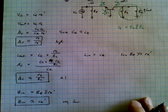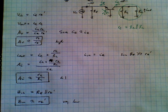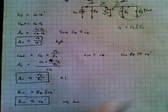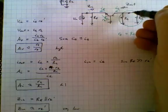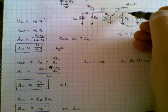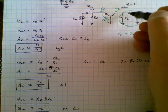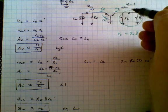And we can also take a look at Zout, the output impedance. And again, we're looking from here. And as you can see, the only thing that we see is RC in parallel with whatever is in the collector.